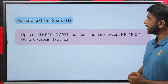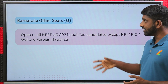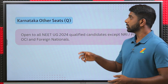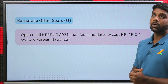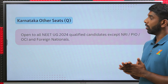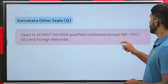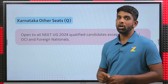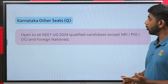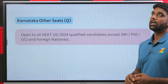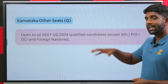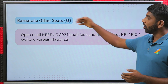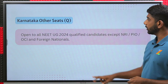Next are also private seats but they are called other seats or Q seats. For the other seats, candidates from all over India are eligible, but NRI, PIO, OCI, and foreign nationals will not be eligible, because there is a separate NRI quota where these candidates will come under. So these candidates will not be eligible for the other seats or Q seats.